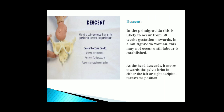Descent: in the primigravida, descent takes place likely from 38 weeks of gestation onwards. In multigravida women, it may not occur until labor is established. As the head descends, it moves downwards to the pelvic brim in either the left or right occipito-transverse position. The baby descends through the pelvic inlet towards the pelvic floor, and descent occurs due to uterine contractions, amniotic fluid pressure, and abdominal muscle contraction.